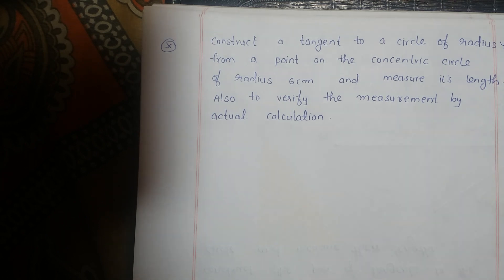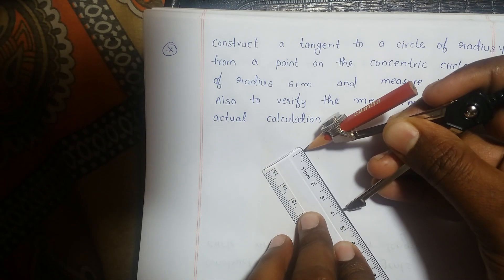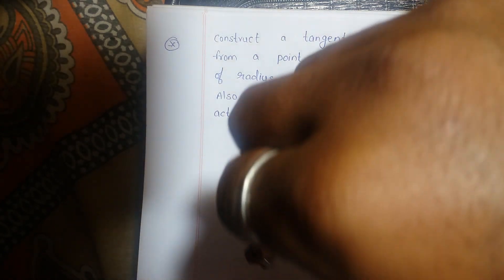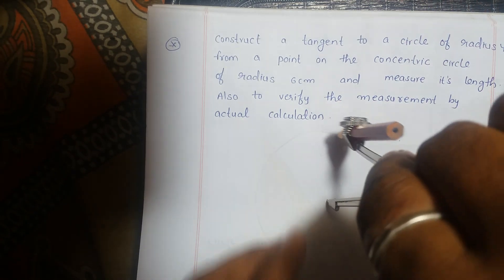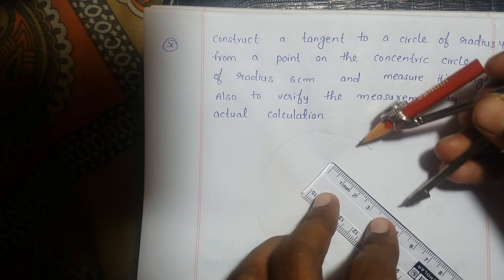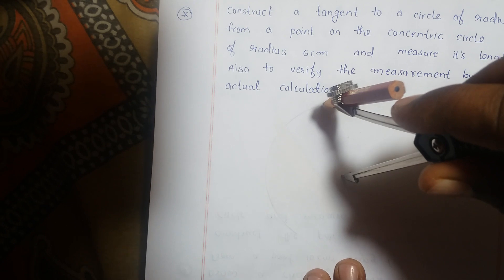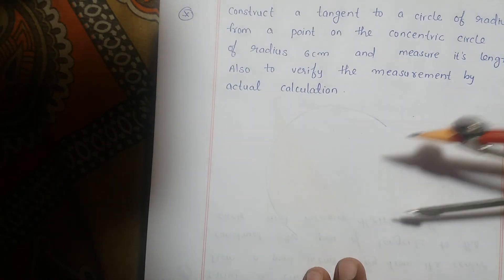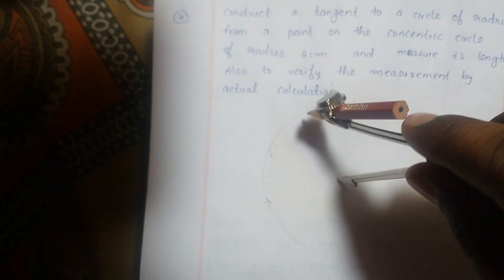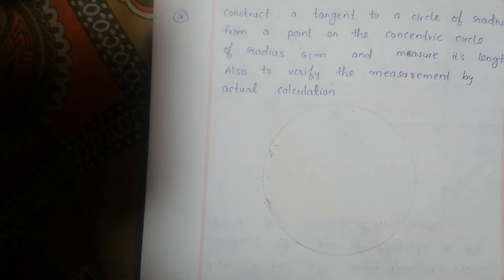Take a radius of 4 cm with the help of a compass and scale. Draw the circle of radius 4 cm.